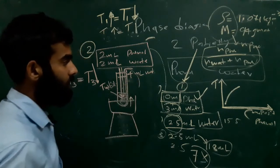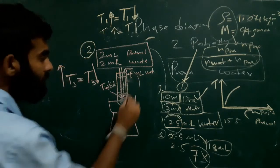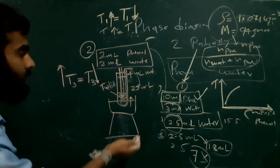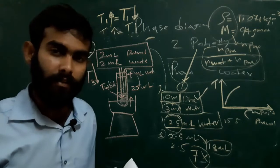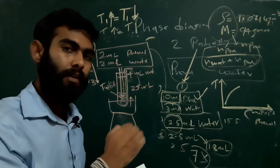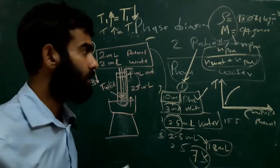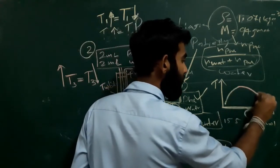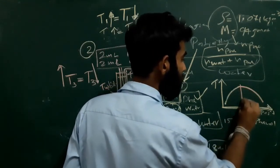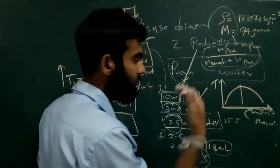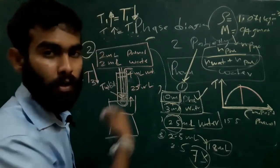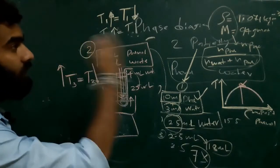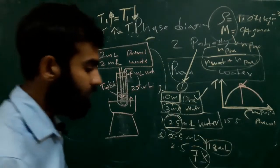The final total added volume of water will be about 25 ml. Likewise, we get a series of temperature readings after disappearance and appearance, giving another set of data and the other half of the curve. This is the final phase diagram of the two partially miscible liquids, showing the upper critical temperature. This is the overview of the experiment.